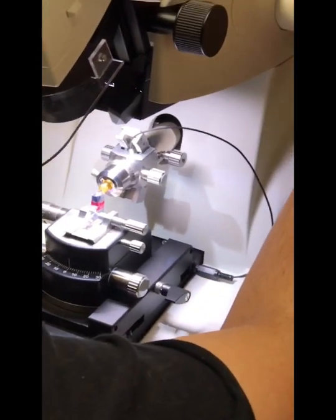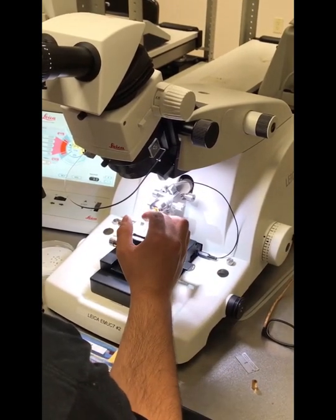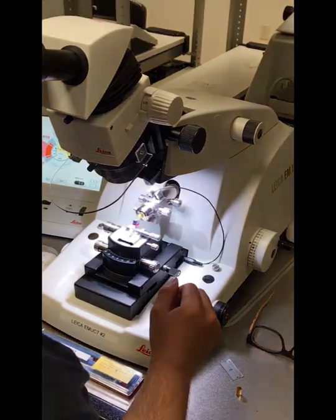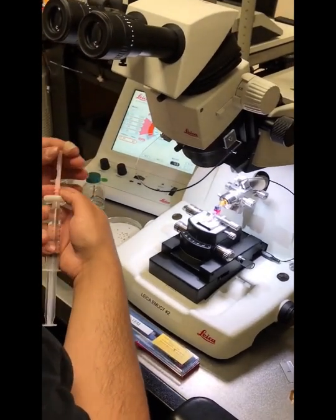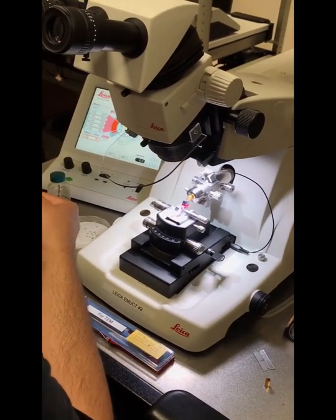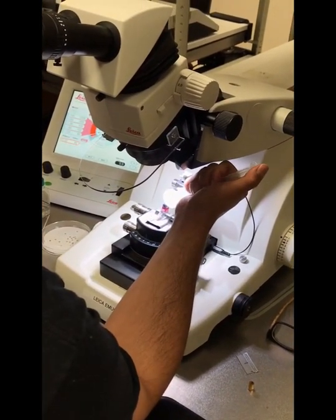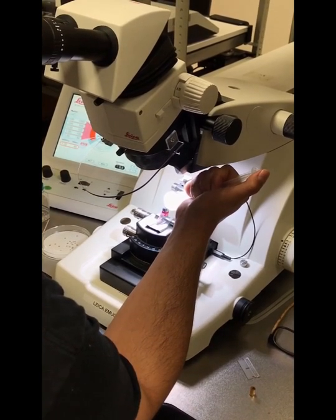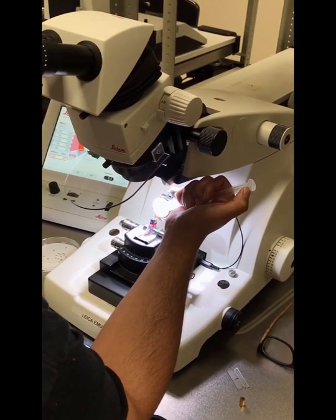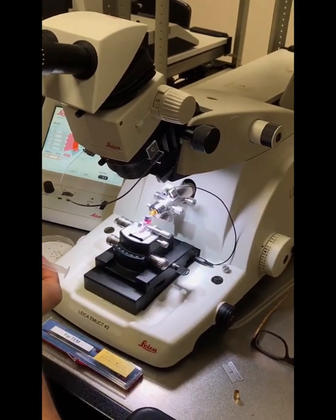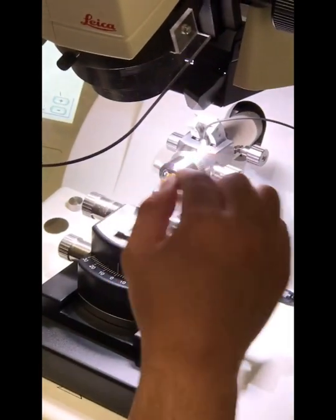Okay, so after your adjustments are all made and you can clearly see your knife, the boat reservoir, and the block, then you can begin. So the first thing I'll do is I'll fill up the boat with deionized water. And you want to fill it up just until you can see a shiny reflection on the surface of the water.